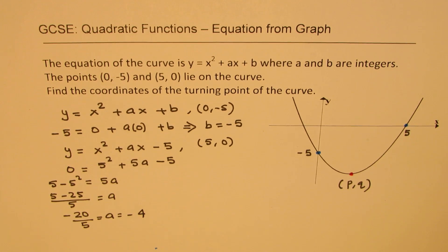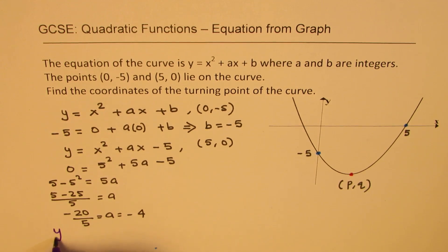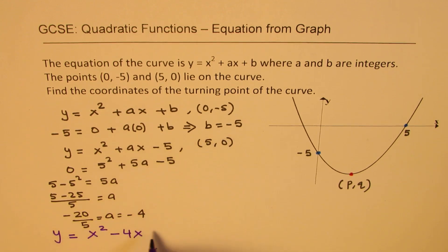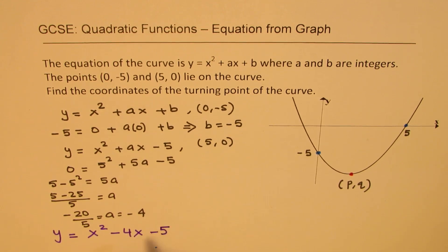So finally we got our equation. Let me rewrite the equation here. We have y equals x squared—the value of a is -4, so that's minus 4x—and the value of b we found as -5. So that becomes the equation for the parabola.